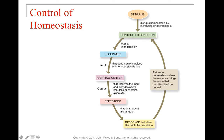Each controlled condition is monitored by specific receptors. When a receptor detects that homeostasis is disrupted — a controlled condition is too high or too low — it sends information to a control center, generally the brain, though hormonal secretion from something like the adrenal gland can also serve this role. The control center sends nerve impulses or chemical signals to an effector tissue, which brings about a change to return the controlled condition to normal and restore homeostasis.